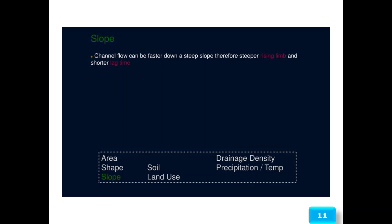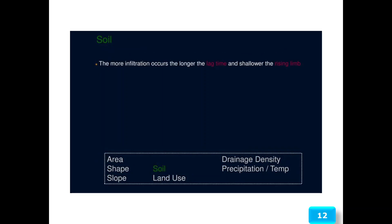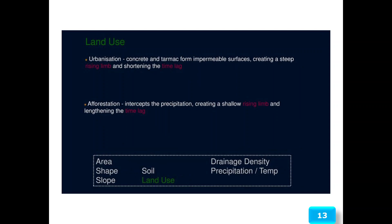Slope: channel flow can be faster down a steep slope, therefore producing a steeper rising limb and shorter lag time. Soil: the more infiltration occurs, the longer the lag time and the shallower the rising limb. Land use: urbanization with concrete and tarmac forms impermeable surfaces, creating a steep rising limb and shortening the time lag. Afforestation intercepts precipitation, creating a shallow rising limb and lengthening the time lag.